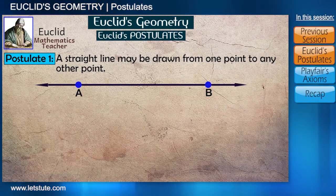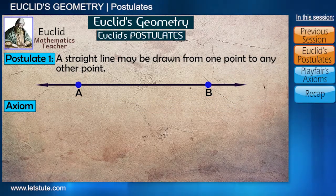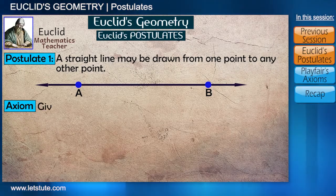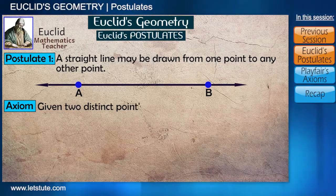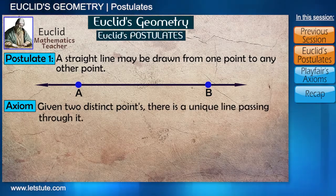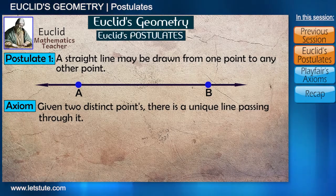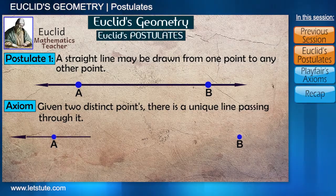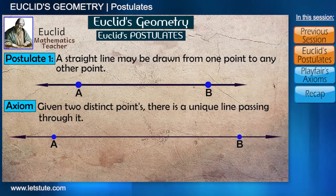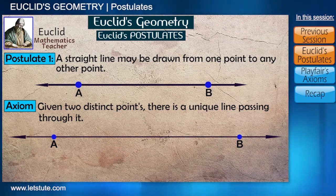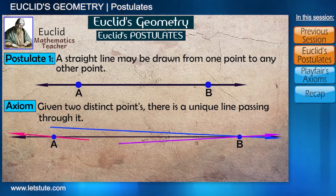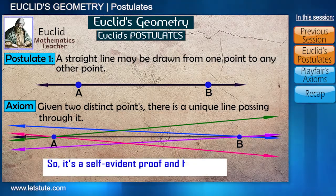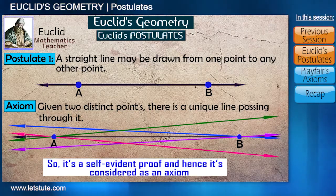And hence, there comes another axiom that mathematicians stated for this postulate, which says that given two distinct points, there is a unique line passing through them. So, as we have two points A and B, only one line will pass through them. Even if we try geometrically to pass more than one straight line through A and B, it is not possible. So, it is a self-evident proof and hence it's considered as an axiom.